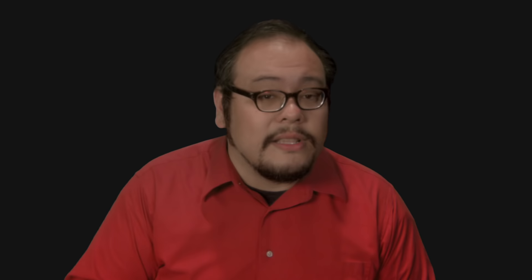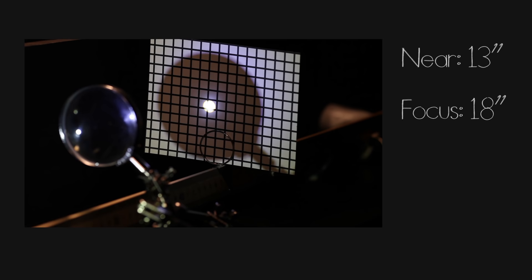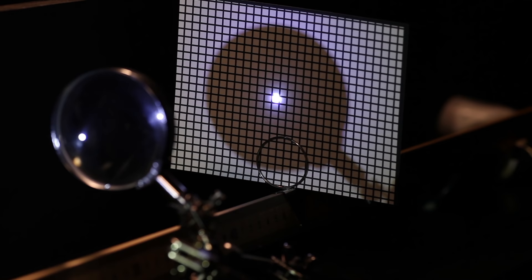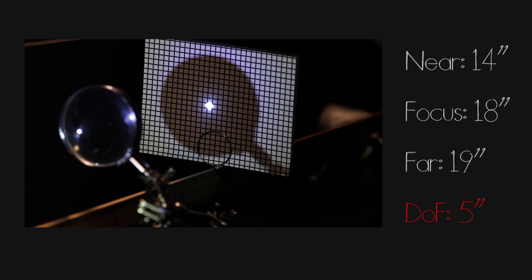Now watch what happens as we reduce the size of the pixel, thereby reducing the circle of confusion. Our focus is still at 18 inches, but our near is only 13 inches and far is 21 inches, giving us an 8 inch depth of field. Going even tighter with the pixel grid, we get a near of 14 inches and a far of 19 inches, giving us a 5 inch depth of field. So as we increase the resolution, we are going to make the depth of field shallower. This may actually be rather intuitive. It's really hard to see what's in focus when you're looking at a tiny viewfinder, but once you blow up your image to the big screen, you can see all those focusing problems. But there's one more takeaway.